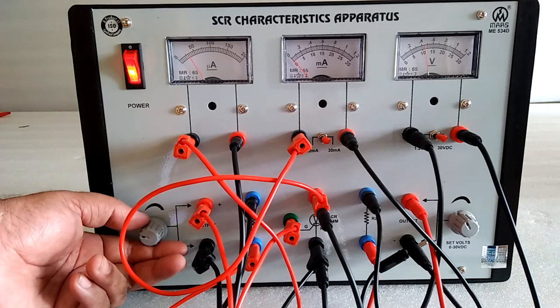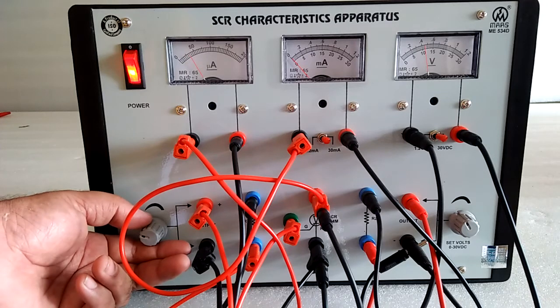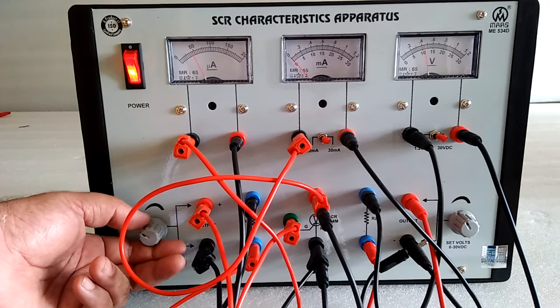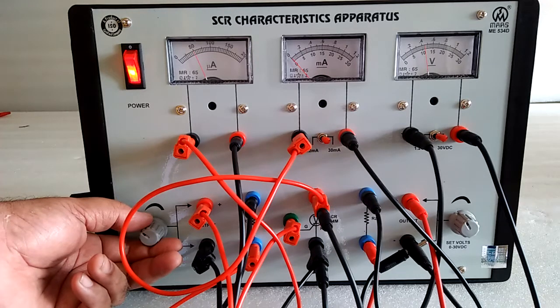When SCR will be fired, the current will increase and voltage across anode cathode will decrease.